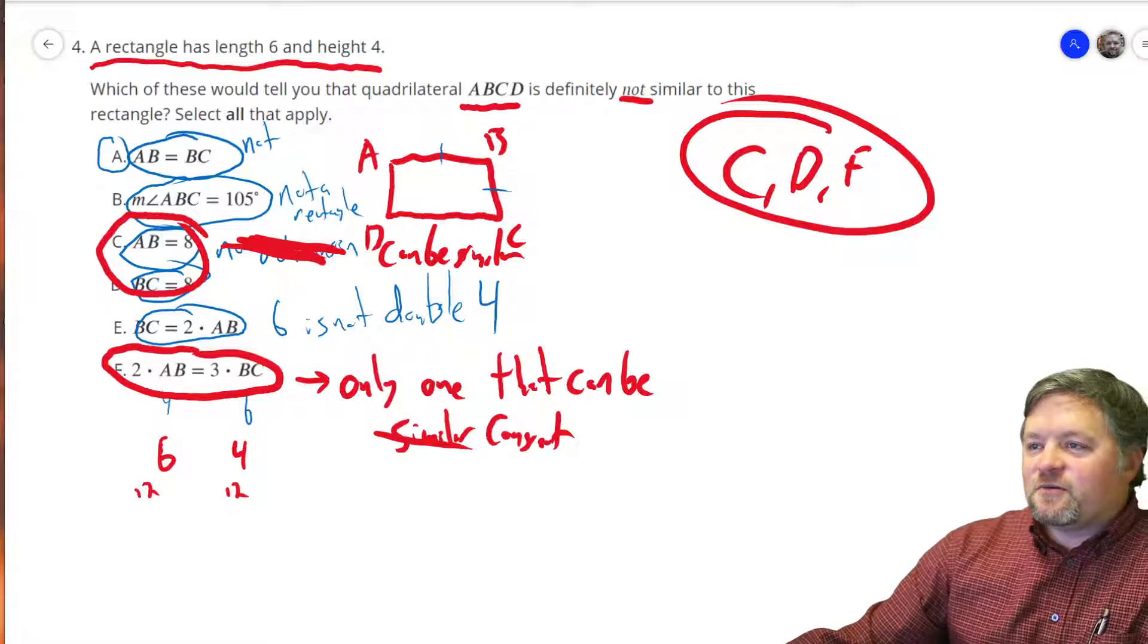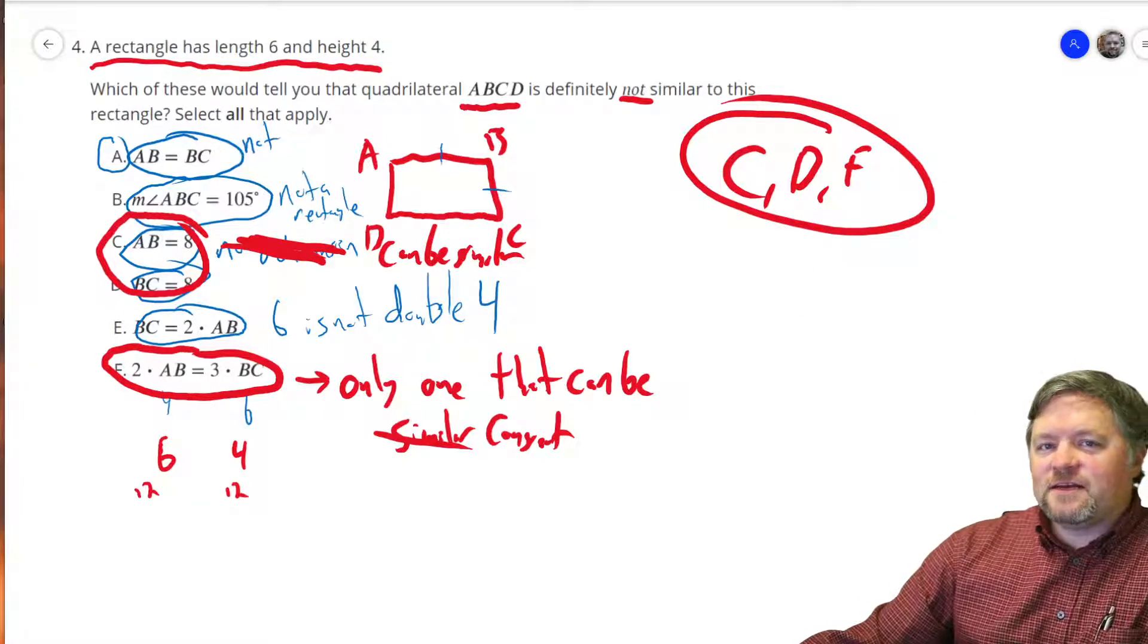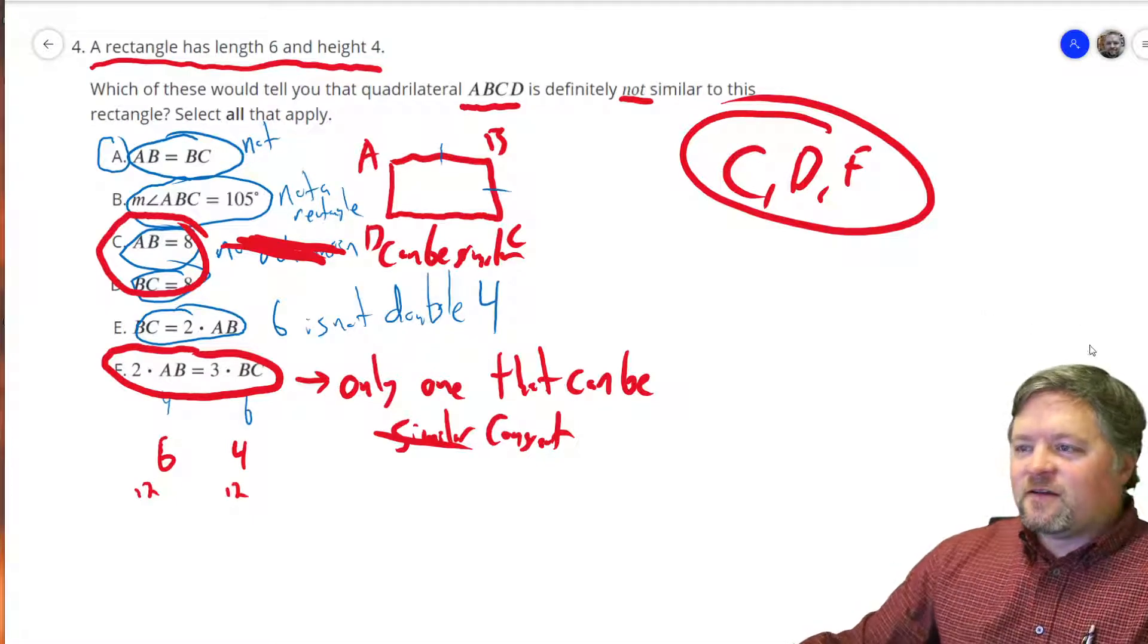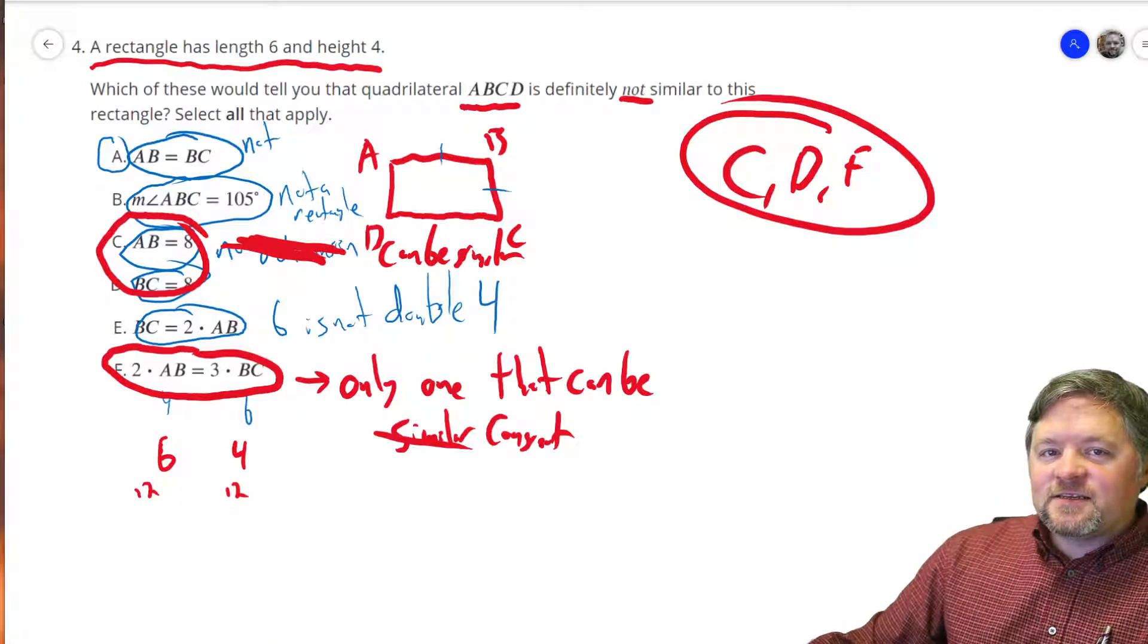And isn't it nice to know that you're not the only one who makes mistakes. Math teachers do it too. C, D, and F. Congruent and similar, not the same thing. I shouldn't be recording videos this early in the morning. This has been another episode of Mr. Boskin Does Some Math. Thanks for watching. See you next time.